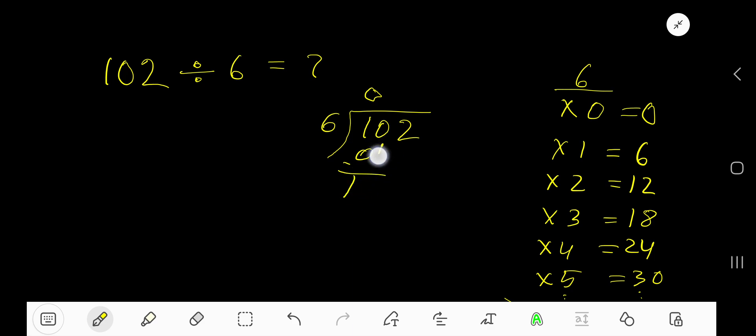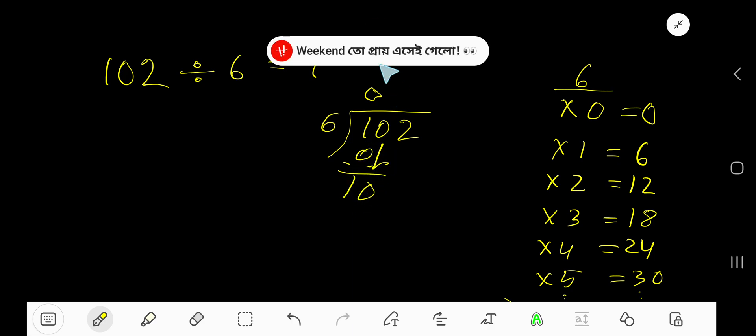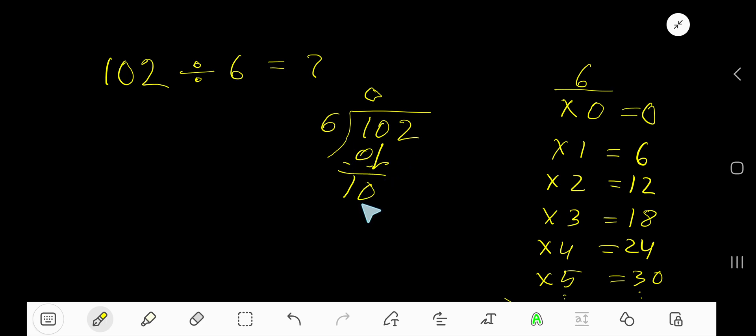After subtracting you get 1. Bring down the next digit, 0. 6 goes into 10 how many times? 2 times is too much. 10. One time. 1 times 6 is 6. Subtract, getting 4. Bring down the next digit, 2.